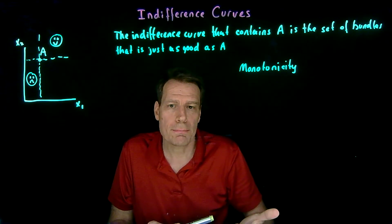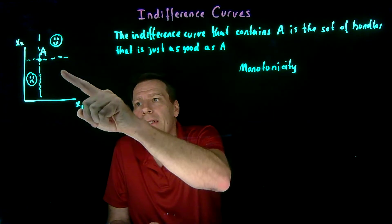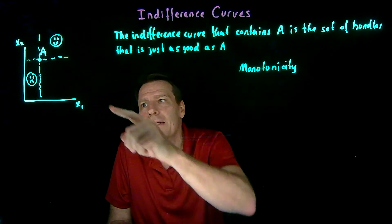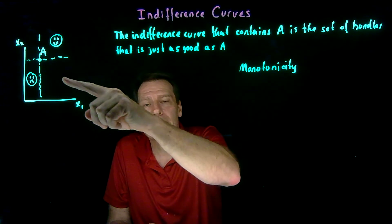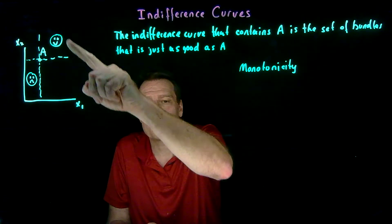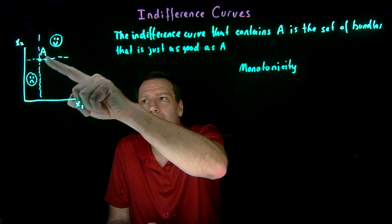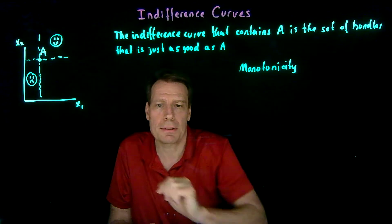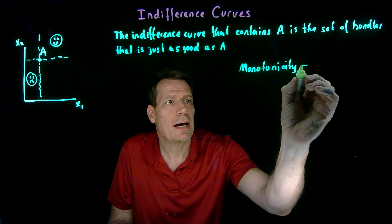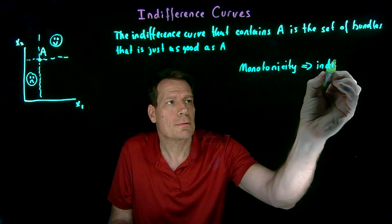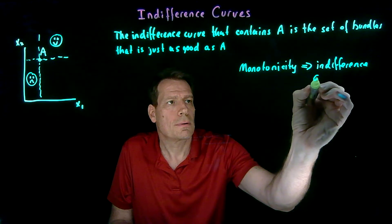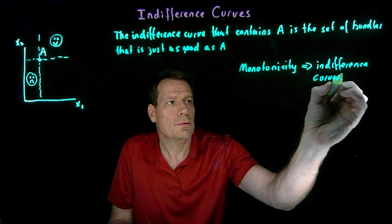So the indifferent bundles to bundle A must lie here and here, which means that whatever this indifference curve is going to be, it's going to have a downward slope. It can't have an upward slope because then it would cross into these areas and make us happier or less happy than bundle A does. So monotonicity implies that indifference curves slope down.